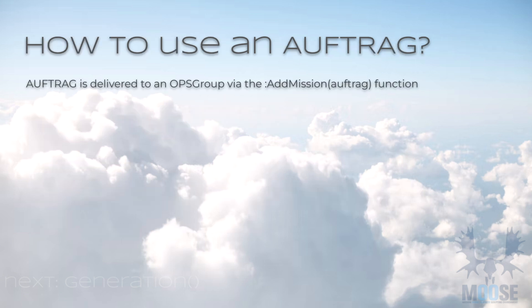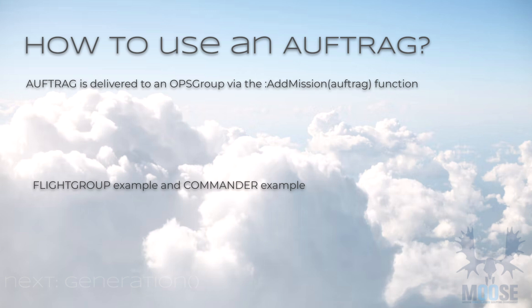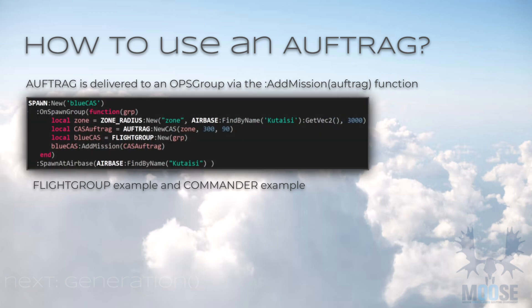So how does the code look using an Auftrag? Once they've been defined with the new Auftrag code, they are delivered to an ops group via the AddMission Auftrag function. We'll show two different ways to execute an Auftrag — one at the flight group level and the other at the commander level. The first one is the flight group. You're looking at the line that says: CAS_Auftrag = AUFTRAG.New_CAS. That is the defining feature of that Auftrag — where it goes, where it's executed, what speed, etc. The second part is the instantiation of the flight group, which is part of the ops groups. The flight group is created from the actual DCS group and the mission is added.